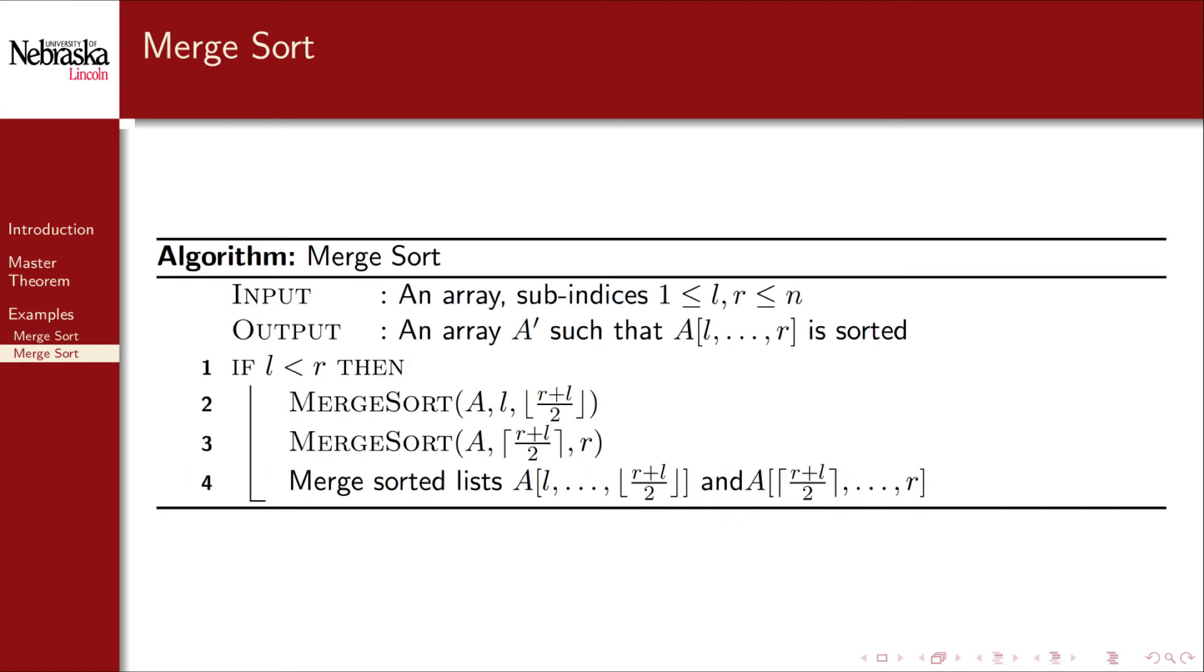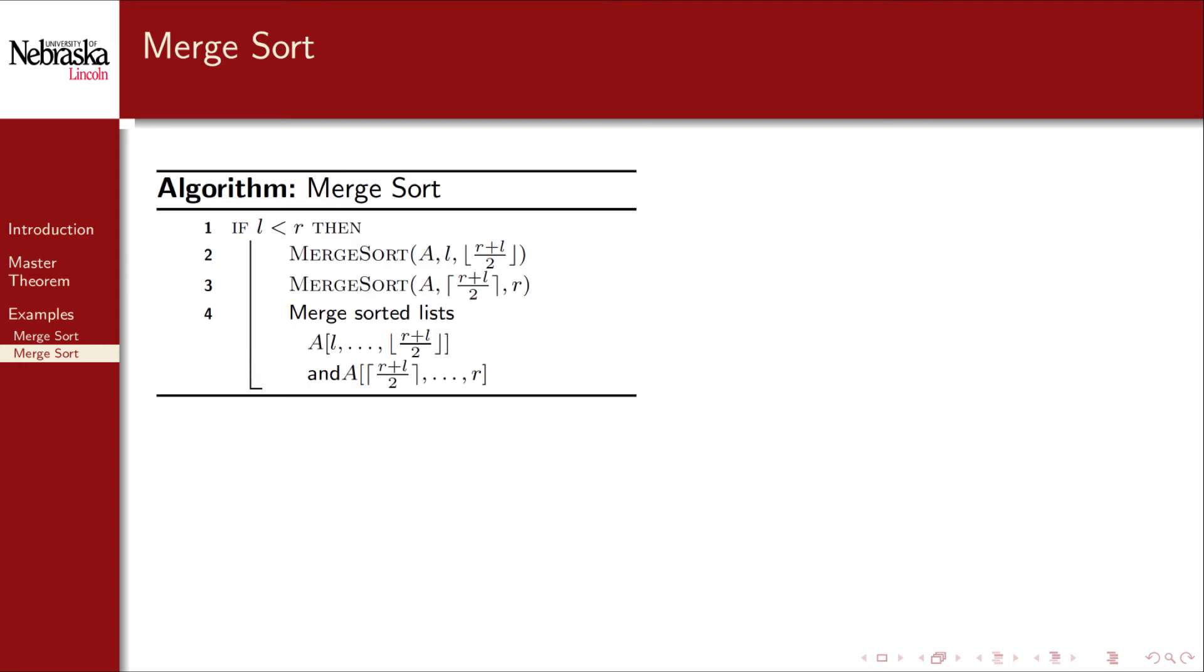Let's run through another example, merge sort. Merge sort works by breaking an array up into two equal parts and recursing until the array is of a size 0 or 1, which is sorted by definition. As the recursion returns, two sorted sublists are merged together.